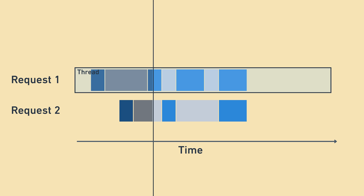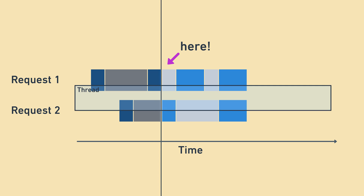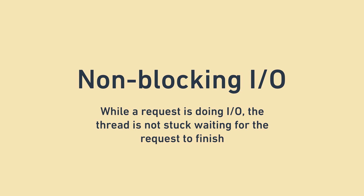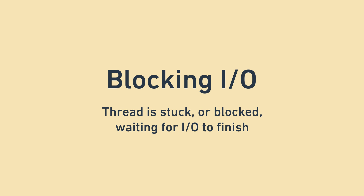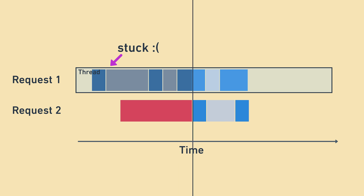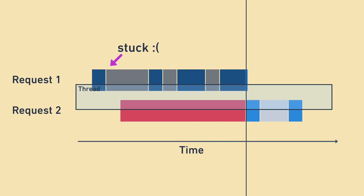Here's the exciting part. Just like a waiter can save time by switching tables whenever a table doesn't need help, non-blocking IO allows a thread to save time by switching requests whenever a request is doing IO. This greatly increases the amount of effective work that a single thread can do. The non-blocking part means that while a request is doing IO, the thread is not stuck or blocked waiting for the request to finish. Here is what the timing diagram might look like if we were doing blocking IO — there's a lot more red, which means a lot more waiting and unnecessary latency.